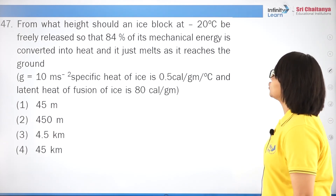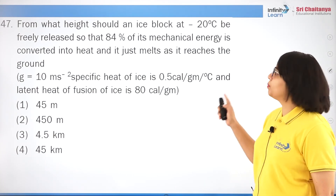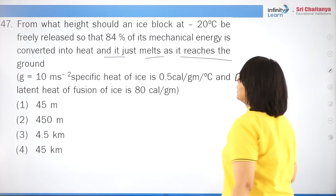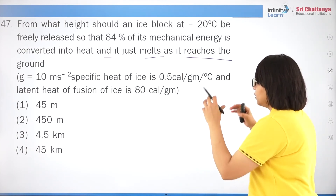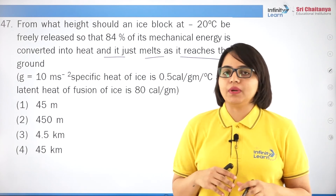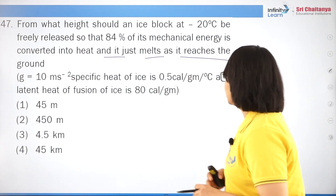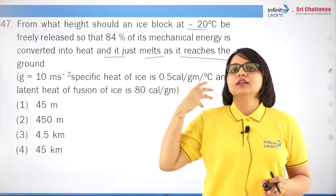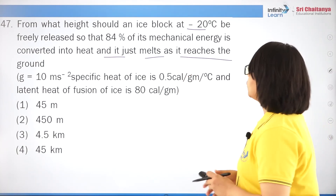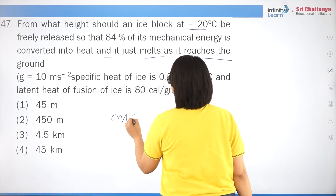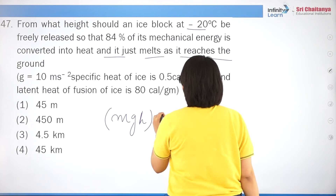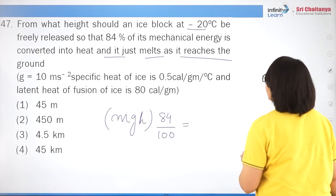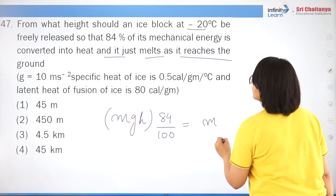Question 13: oblique projectile motion consists of motion of a vertically thrown-up body combined with horizontal motion at uniform velocity. Along x-axis velocity is constant (U·cosθ), and along y-axis it behaves like a vertically thrown object. Correct answer is option 1.